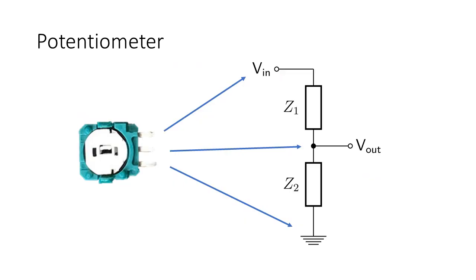A potentiometer consists of two resistors here called Z1 and Z2. The values of these resistors change when the joystick is moved around. The total resistance of the two resistors always add up to the same number. This number is arbitrary but can for example be 10k ohms.